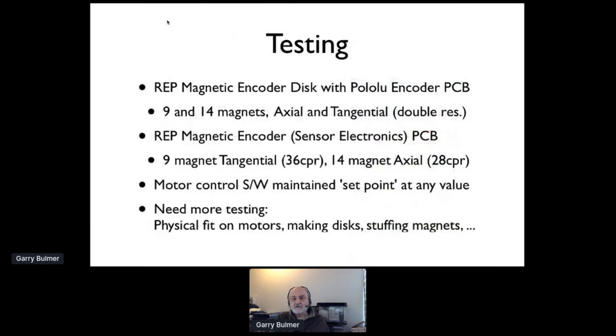We've been doing testing. All of the initial testing was using the Pololu encoder PCB. We did 9 and 14 magnets axial and tangential which gave us double resolution and they worked fine. Our electronics has had less testing - only got the boards right quite recently. We've tested with 9 magnet tangential 36 counts per rev and 14 magnet axial 28 counts per rev and it so far is working fine. It looks like we can generalize this with different variations of encoder disk.